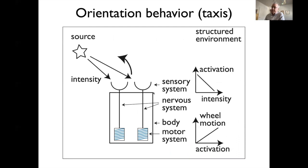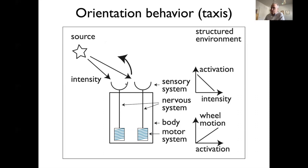This system is embedded in some environment — a very important insight: understanding behavior and cognitive competence is based on a connection to the world. The environment must be structured with respect to whatever the sensors are sensitive to, such as light or sound. There needs to be some structure — for instance, a light source with a distribution of intensity — so the sensors receive different amounts of that physical quantity.